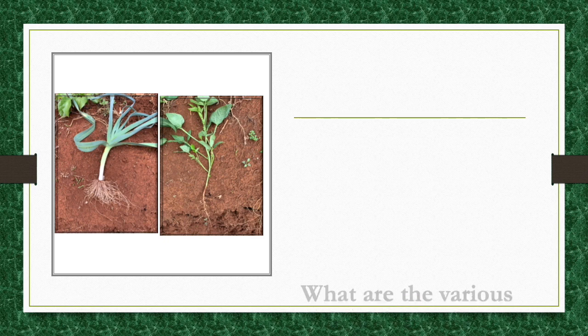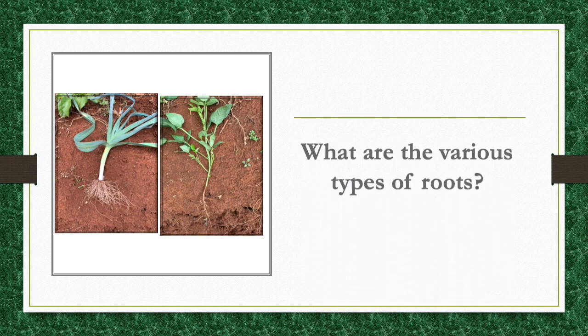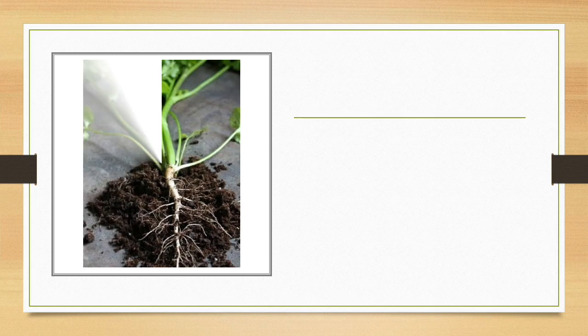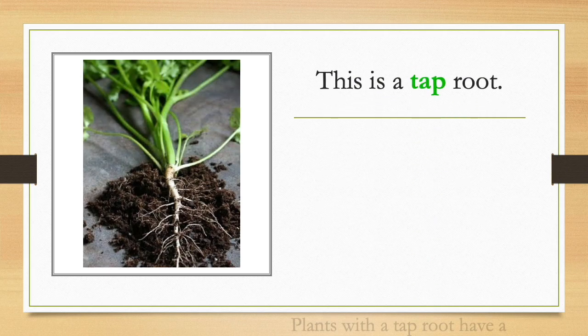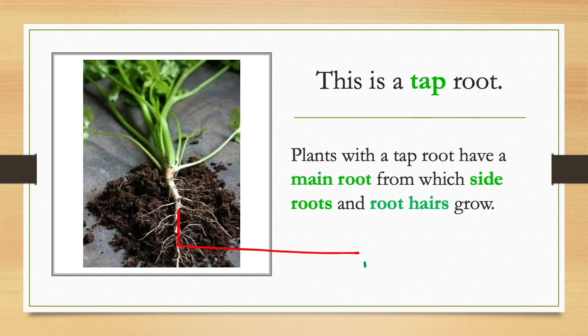What are the various types of roots? This is a tap root. Plants with a tap root have a main root from which side roots and root hairs grow.